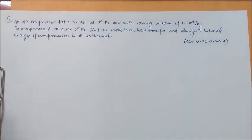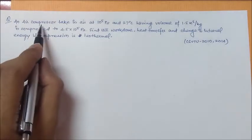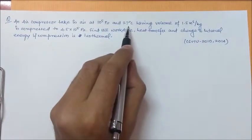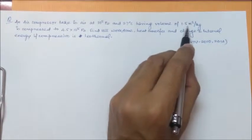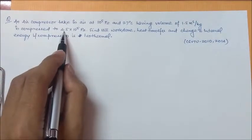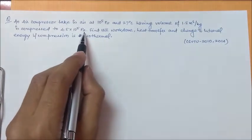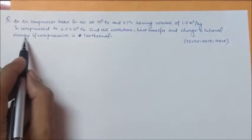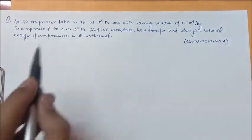In this video, we will discuss a question that has been asked in CSVTU University twice in 2010 and in 2014. The question is: An air compressor takes in air at 10^5 Pascal and 27 degree Celsius having volume of 1.5 meter cube per kg is compressed to 4.5 × 10^5 Pascal. Find the work done, heat transfer and change in internal energy if the compression is isothermal.